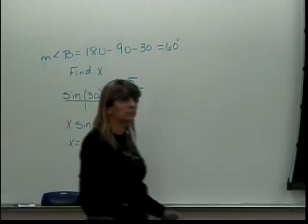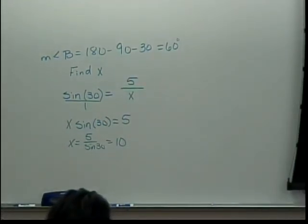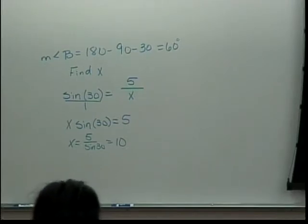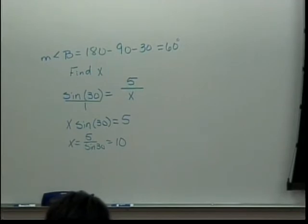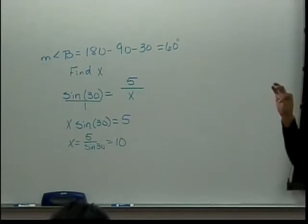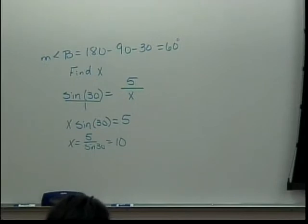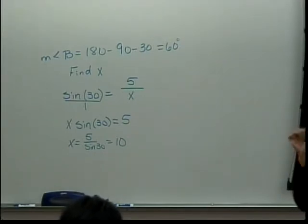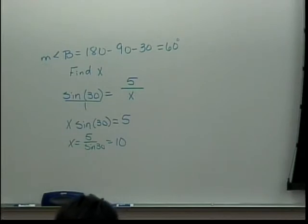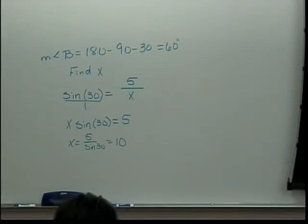If you did not get 10, you need to check your calculator mode. Go into the settings — the third option down — you have a choice of radians or degrees. You want to make sure there's a black box around degrees. As long as you don't loan your calculator to anybody, you'll never have to change that. All of these problems use degrees, so degrees is what you need to get the right answers.